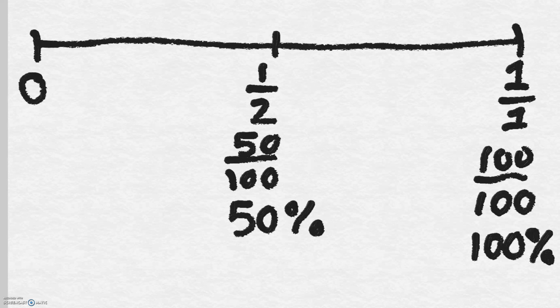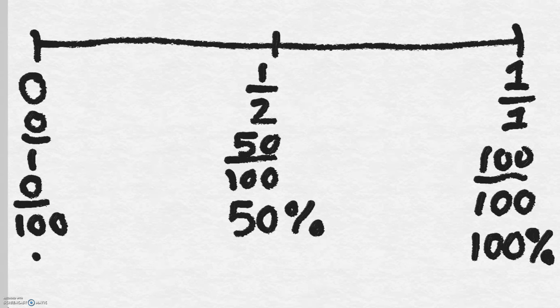How do you think I might write this 0 over here? Well, this is 0 out of 1. It could also be 0 out of 100, which can also be written as 0 percent - 0 out of 100.